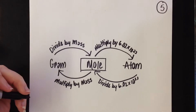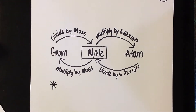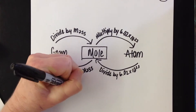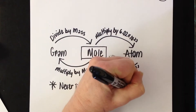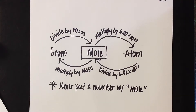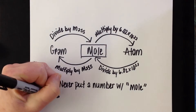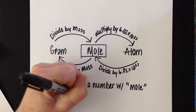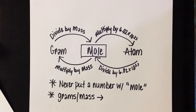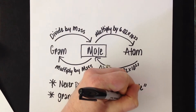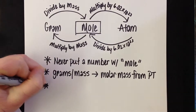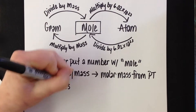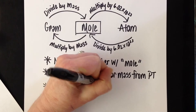A couple of things to remember — this is a great place to pause and write some notes. We are never going to put a number with the word mole; it's an understood one. If mass or grams are involved, we get the molar mass from the periodic table. If atoms are involved, we use 6.02×10²³.